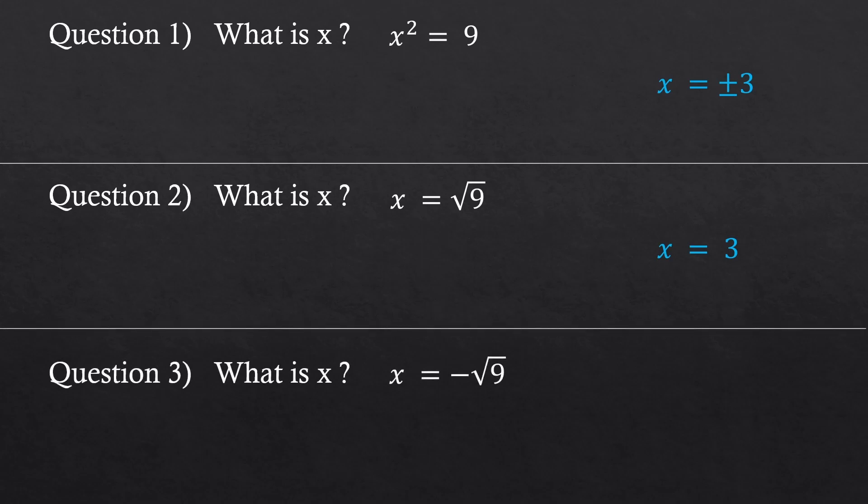It'll become more clear with this. What is x in here? Here, this one should be minus 3. You see, when you see the square root of a number like this one and this one, you're either seeing the positive or negative number already.